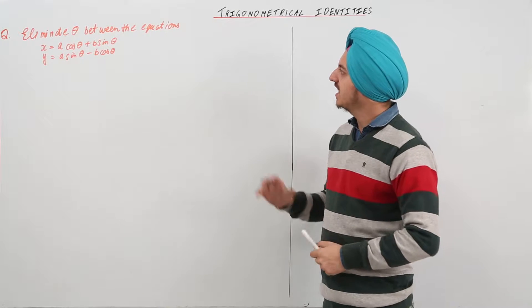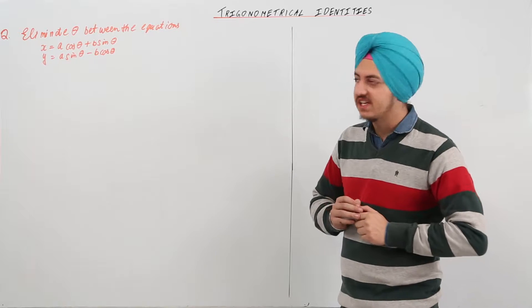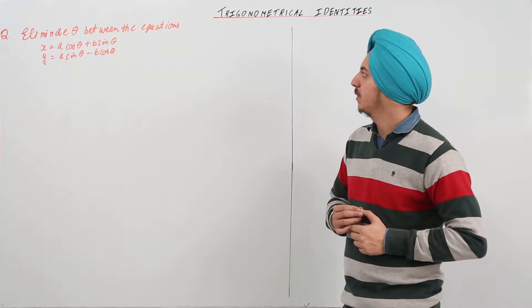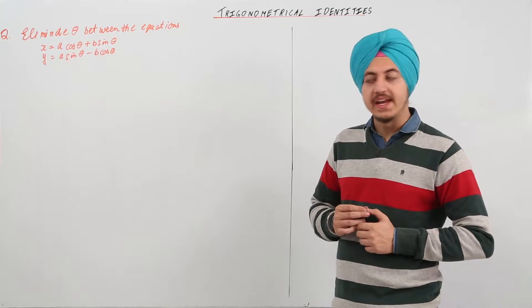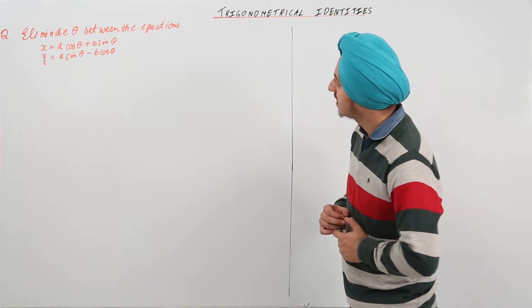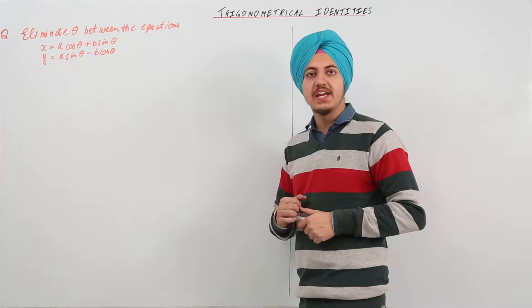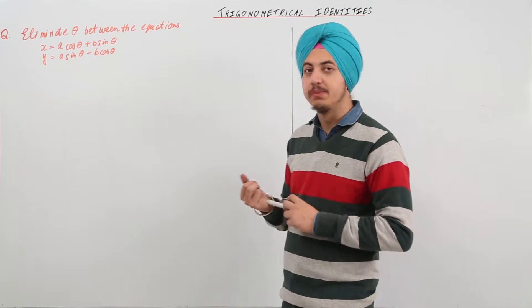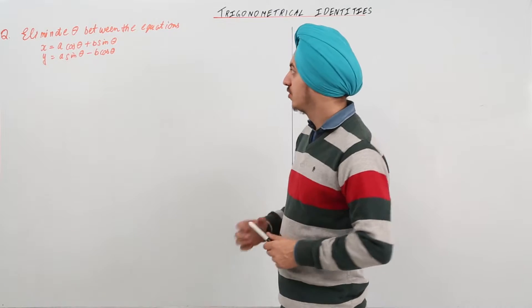The next question says: eliminate theta between the equations x equal to a cos theta plus b sin theta, and y equal to a sin theta minus b cos theta.